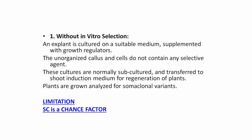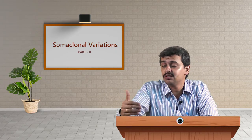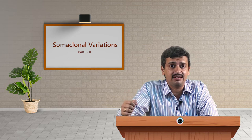In without in vitro selection, most of the times the callus gets formed, and from the callus we have to get the shoots. Those shoots need to be rooted and gradually transferred to the greenhouse. That process is known as the hardening process. After the plant has been hardened, it has to be transferred to the field in order to get the actual variations.